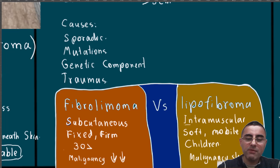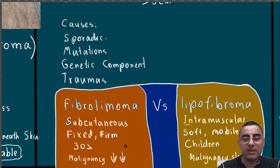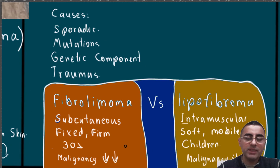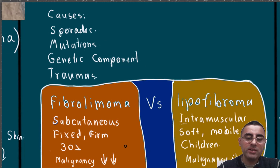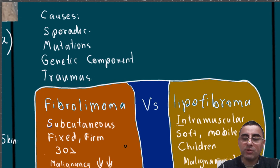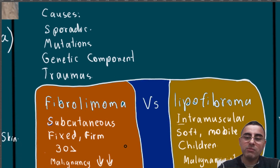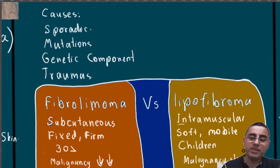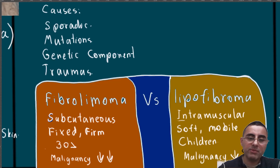Fibrolipomas have very few risk of malignancy. There are some cases described, but malignant transformation of fibrolipoma is considered extremely rare. Lipofibroma also has a very small risk of malignant transformation, but slightly higher compared to fibrolipoma.